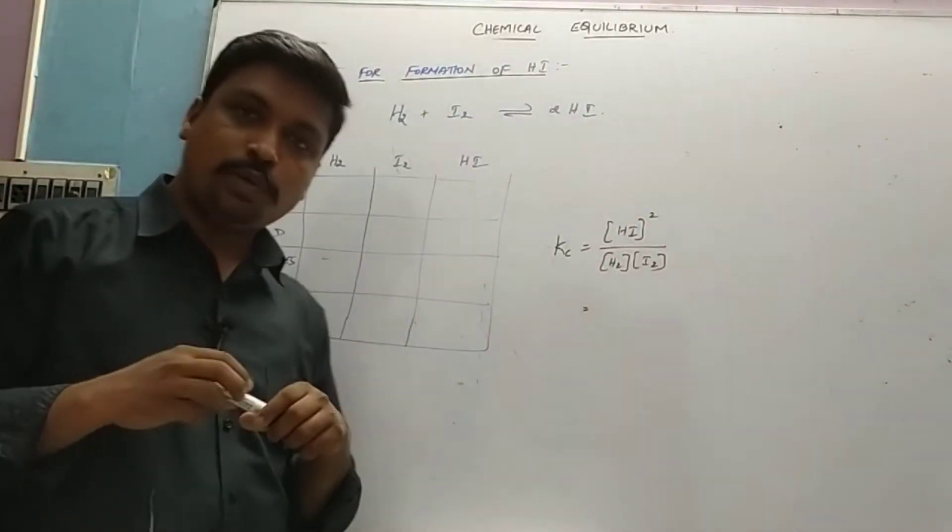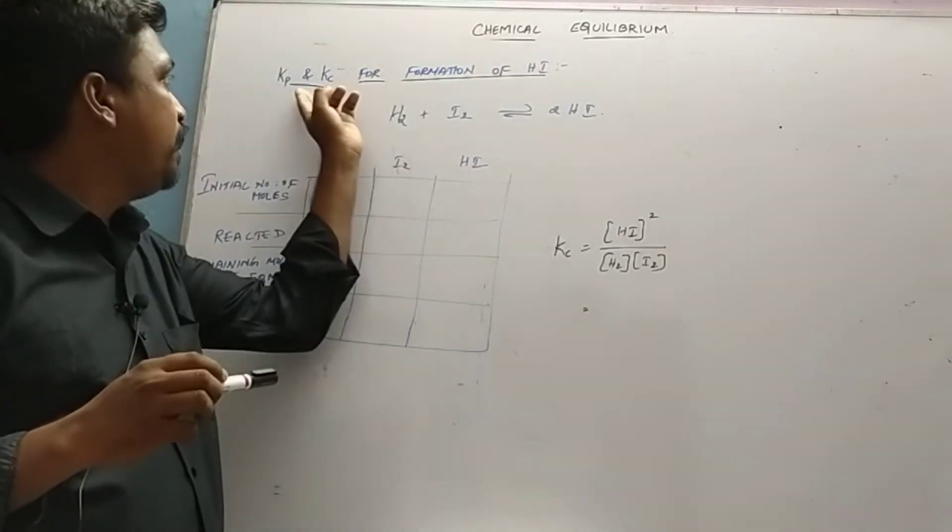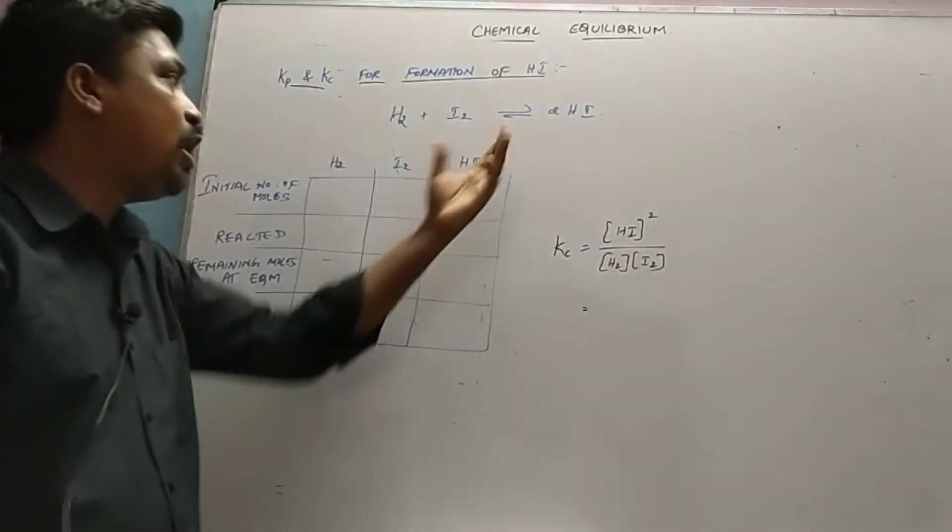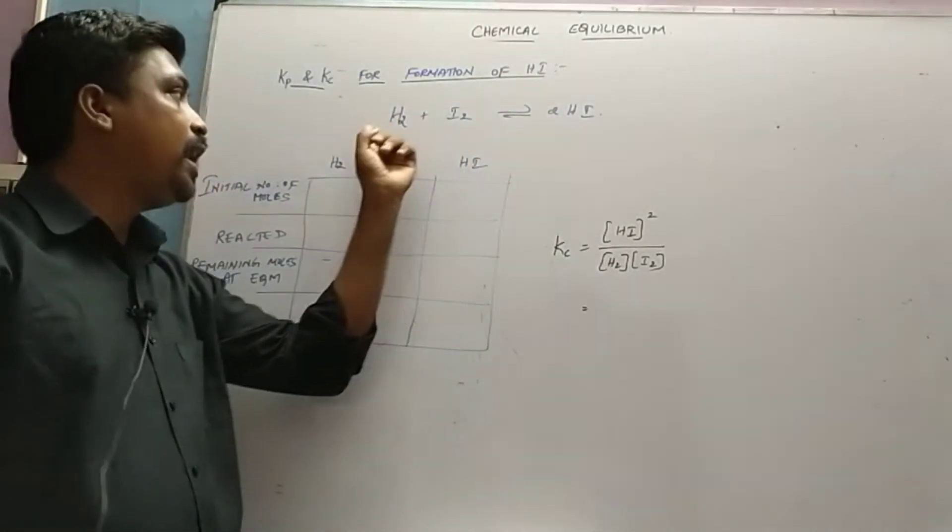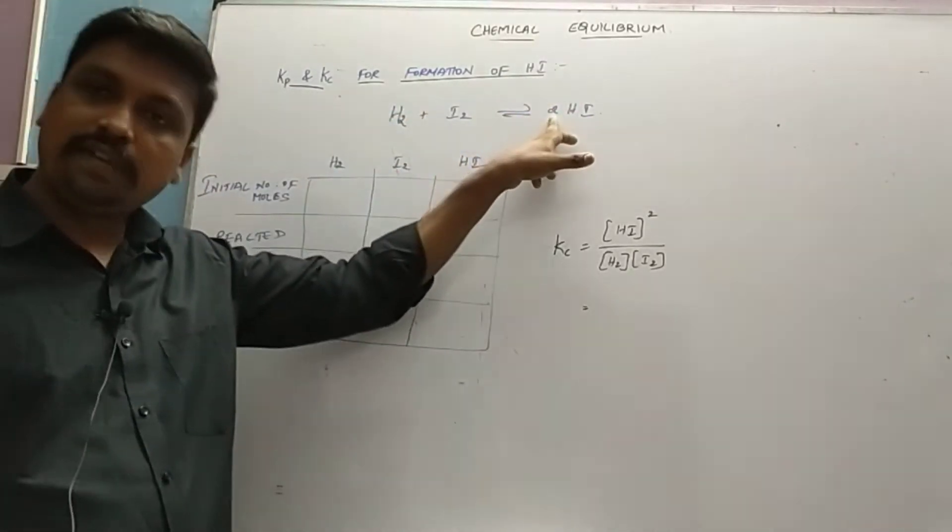In this video we are going to derive the relation for Kp and Kc for the formation of HI. HI is formed when hydrogen and iodine combine. While balancing the equation we will get H2 + I2 → 2HI.